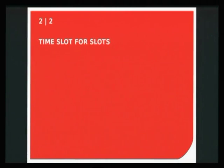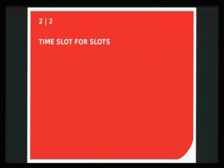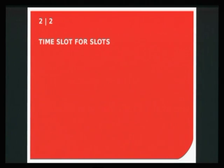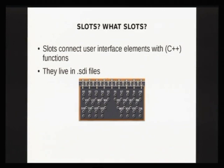So that's one end of the pipe. There are toolbars, a sidebar, menus, and user interaction with those elements. On the other end of the pipe, there are C++ functions — methods that actually carry out the work: format the page, change the fill of a shape, or insert some data somewhere. And what's in between? It's slots. Slots somehow connect those user interface elements with those functions.